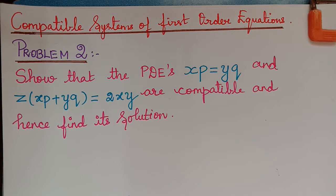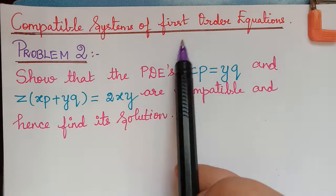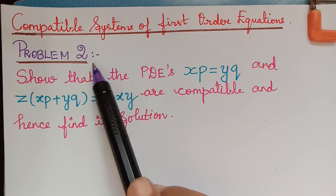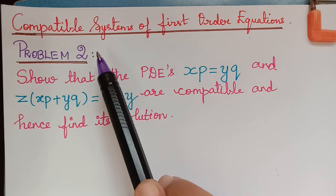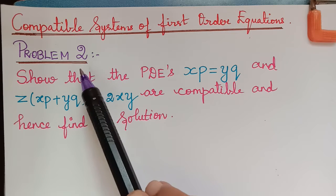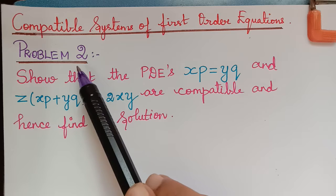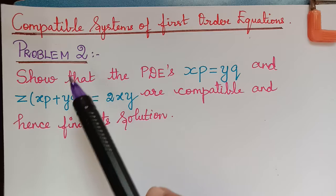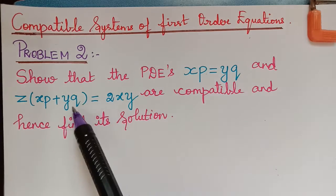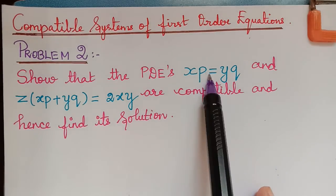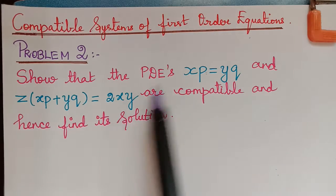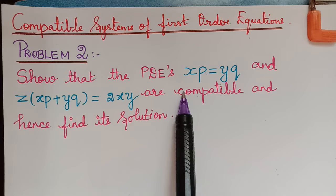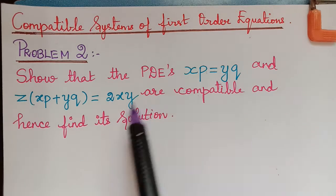Hello students. Under the topic 'Compatible Systems of First Order Equations,' here we have the second problem. Previously we completed the first problem where we proved that the given PDEs are compatible and found the solution. Now in this question we have two partial differential equations. The first step is to prove that these two are compatible, and after proving that, we have to find the solutions.